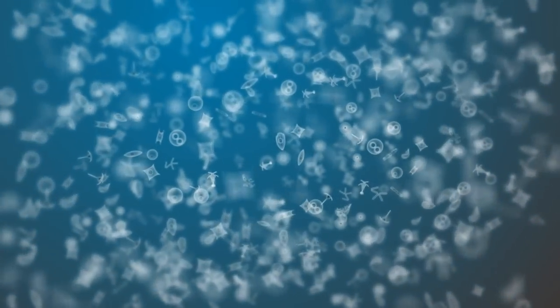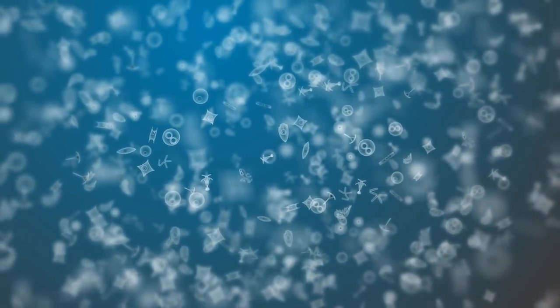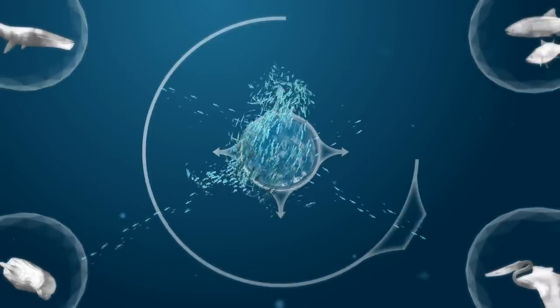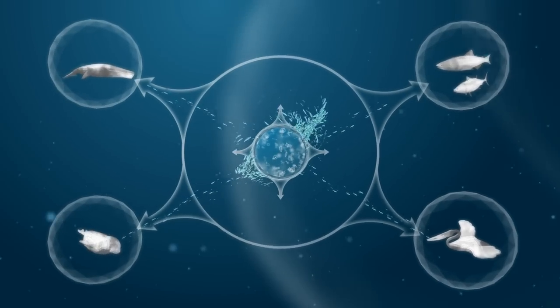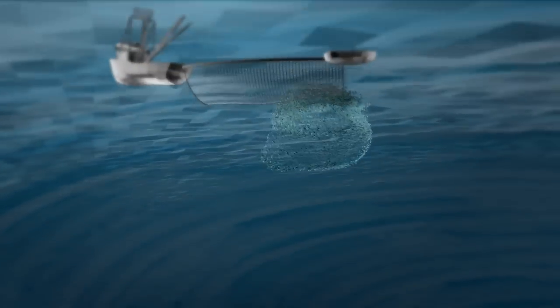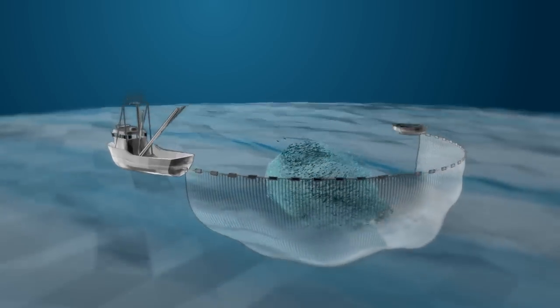They eat tiny plants and animals such as plankton and then are eaten by bigger, more familiar species like sportfish, seals, whales, and seabirds. And with the growing global demand for protein, forage fish have become an increasing target for fishing by humans.